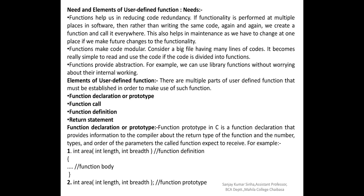Function prototype in C is a function declaration that provides information to the compiler about the return type of the function and the number, types, and order of the parameters the called function expects to receive. Whatever prototype we put in the function, it tells the compiler what return type the function will give, what kind of result, and the order of arguments.